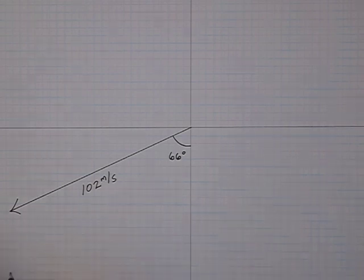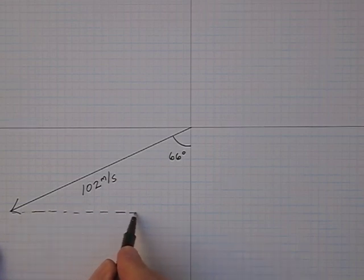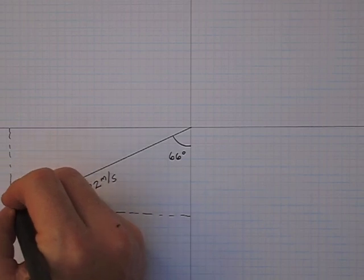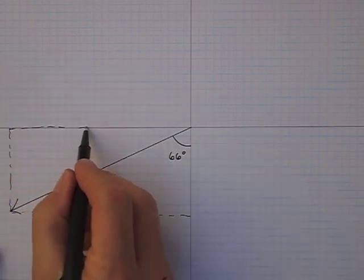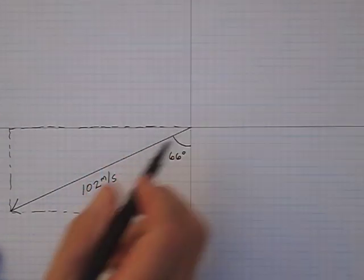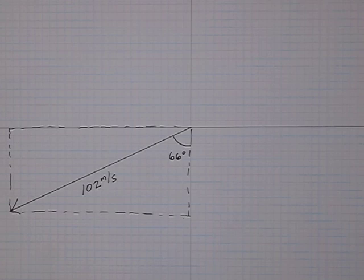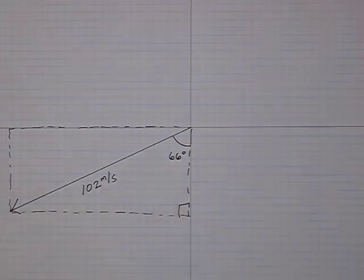So the way I do this is I construct a rectangle around the vector such that the vector becomes the diagonal of that rectangle. And then you can see I have a rectangle here that I can solve, so let's do that.